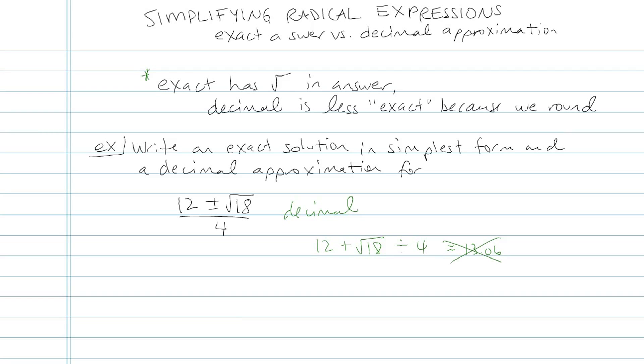That, in fact, is not correct, because what your calculator is doing is it's doing 12 plus root 18 divided by 4 like that. And that's not what we want. We want 12 plus root 18 all divided by 4. So you have to do it a little bit differently.